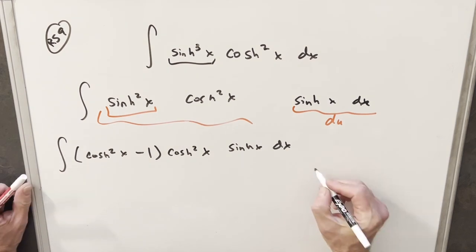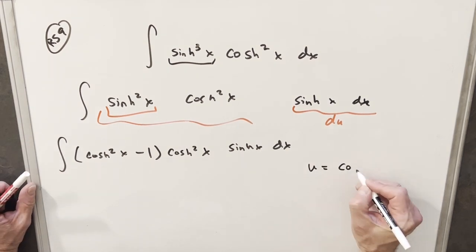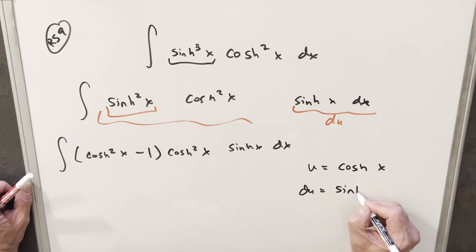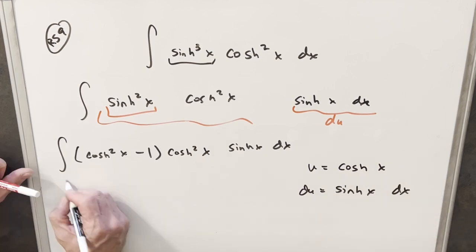And now I'm perfectly set up for that u substitution, so I'm going to make my u equal to cosh of x. We'll take our derivative. Like I said earlier, derivative of cosh is just sinh x dx.